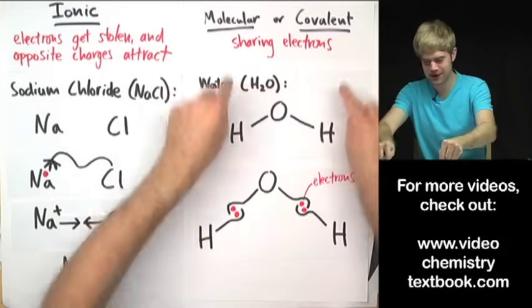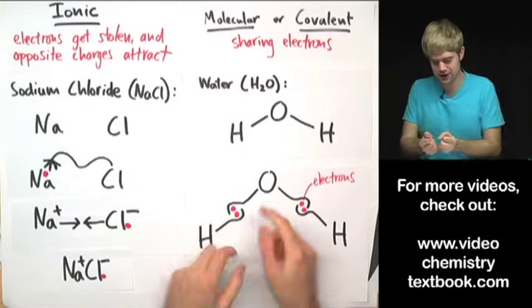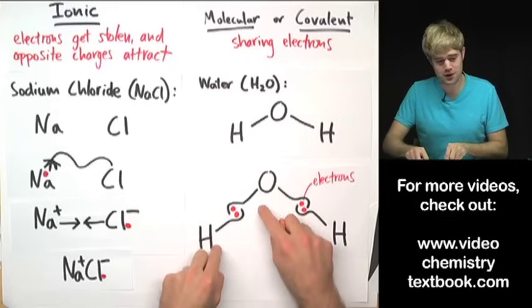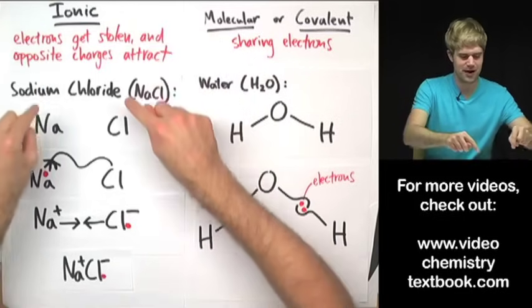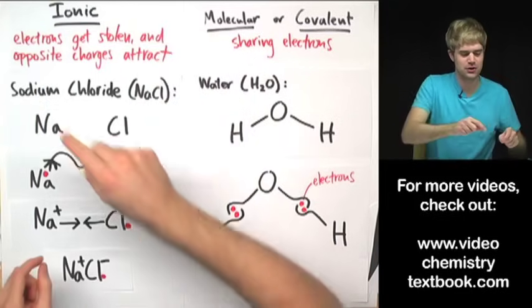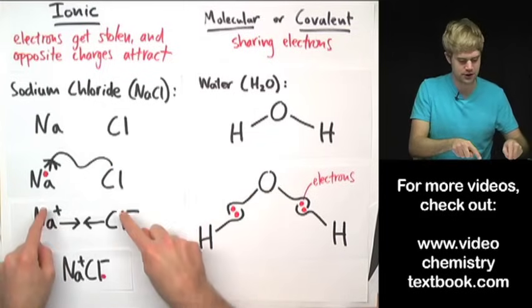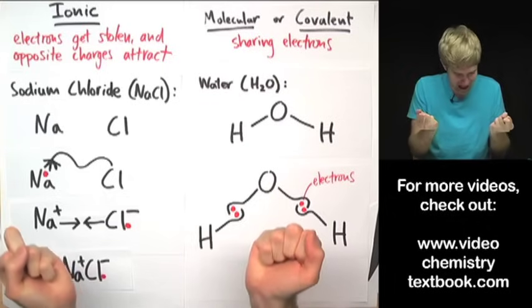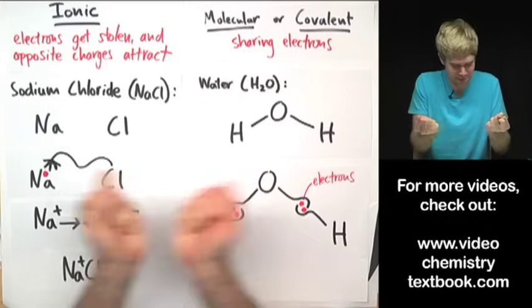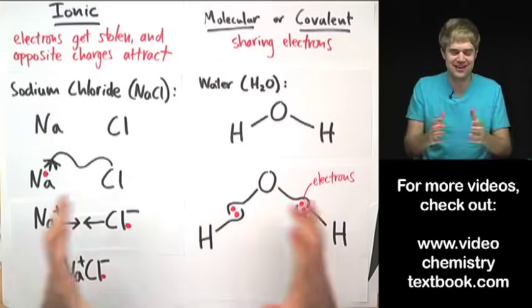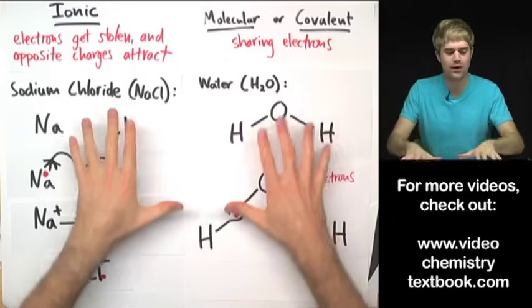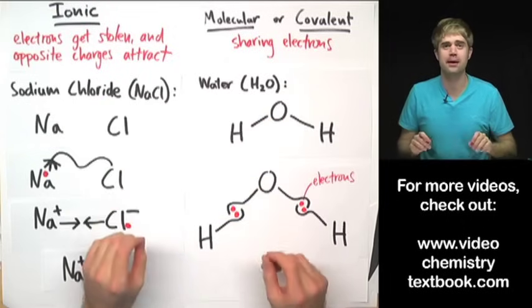So covalent or molecular compounds, the atoms are stuck together because they're sharing electrons with each other. Ionic compounds, the atoms are stuck together because one has stolen the other's electrons. It has given them opposite charges, and then those opposite charges have attracted just like magnets. So this is one way that ionic and molecular compounds differ.